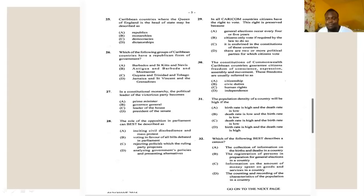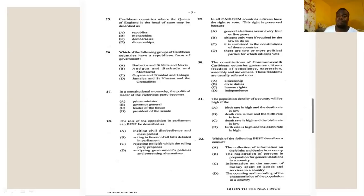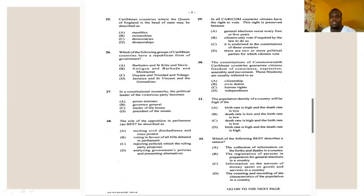Number thirty says: the constitution of Commonwealth Caribbean countries guarantees citizens freedom of conscience, expression, assembly, and movement. These freedoms are usually referred to as — A: citizenship, B: civic duties, C: human rights, or D: independence. The answer for number thirty is C — human rights.